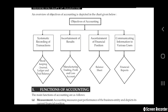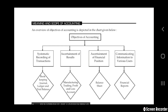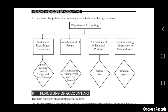So as an overview in a chart, the objective of accounting has four objectives: systematic recording of transactions, ascertainment of results, ascertainment of financial position, and communicating information to various users. For systematic recording you do bookkeeping, general ledger, trial balance. For ascertainment of results you prepare manufacturing, trading, profit and loss accounts. For financial position you make the balance sheet, and for communicating information you prepare financial reports.